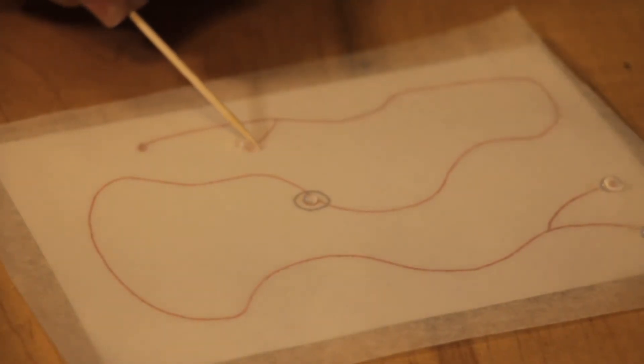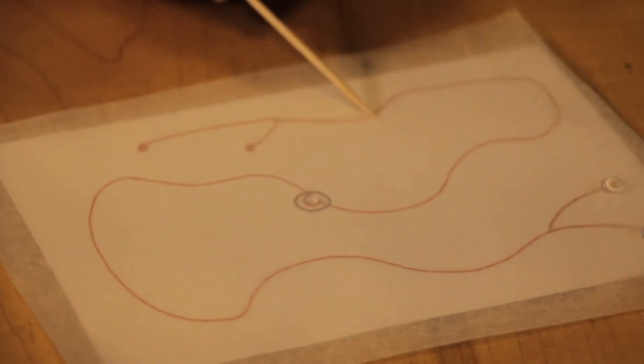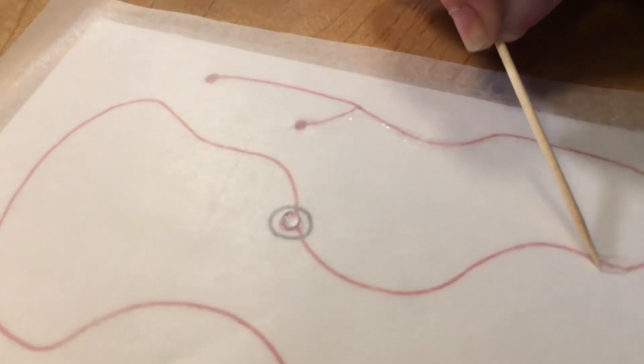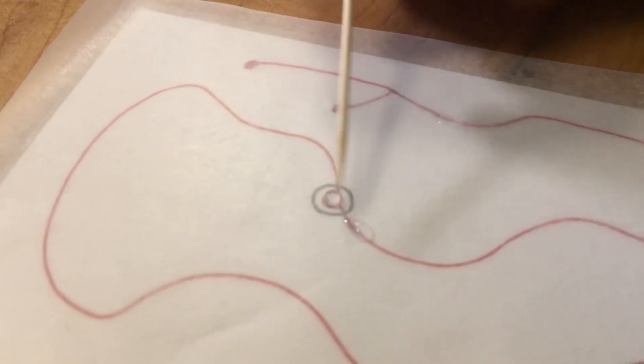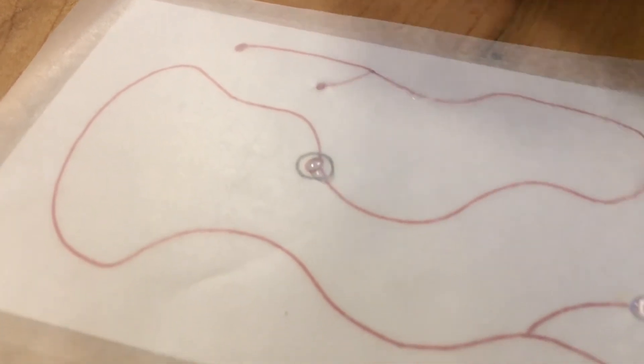When I get to the end, I lift up my toothpick and look, the water is still there. And I can do that with all these little ends and drag my water droplets around the maze. This is really fun. I recommend trying this at home if you have wax paper and a toothpick.